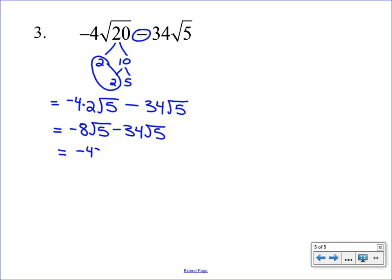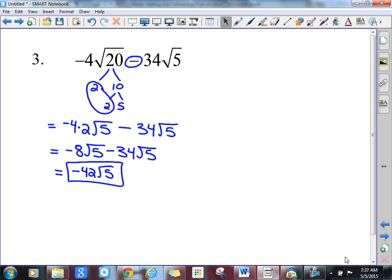So we get negative forty-two square root of five. And that is our final answer. This concludes your video on adding and subtracting radicals. And you may now begin your practice.